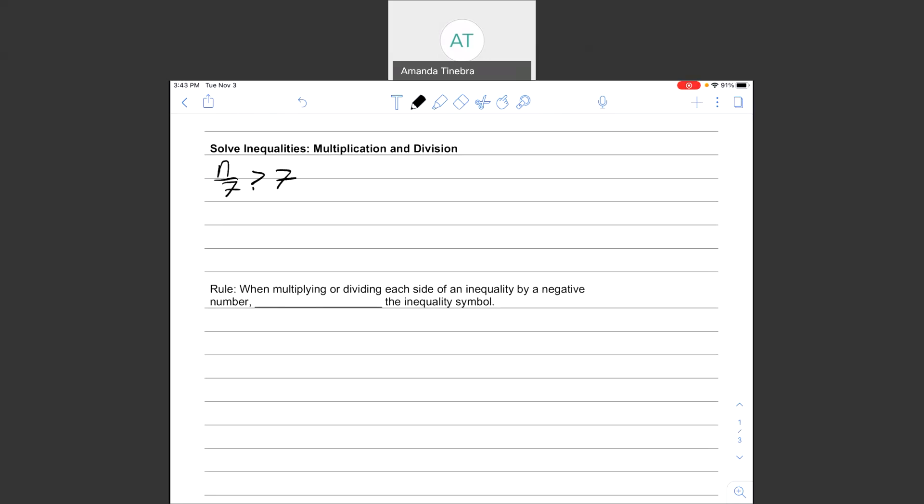If I were going to solve this the way that I did with the addition and subtraction, I put a line through the greater than sign. I'll multiply by 7 on either side, and I will get n is greater than 49.